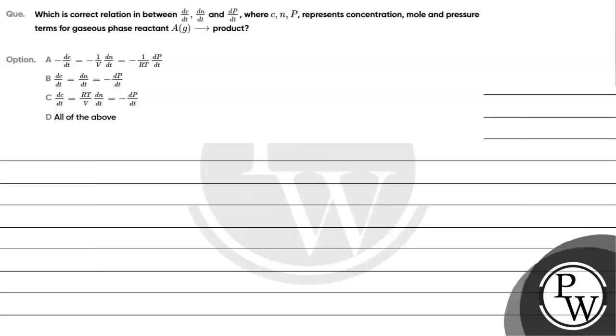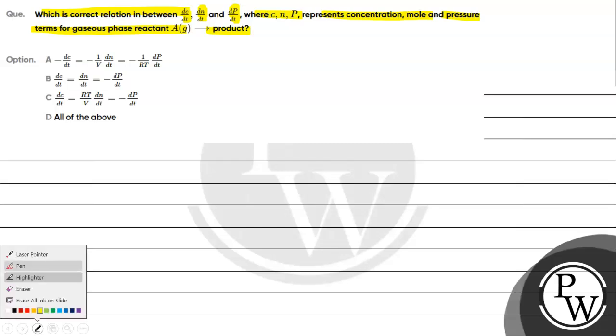Hello Bacho, let's read this question. The question says which is correct relation between dC/dt, dN/dt, and dP/dt, where C, N and P represent concentration, mole and pressure terms for gaseous phase reactant A. Options are given to us.